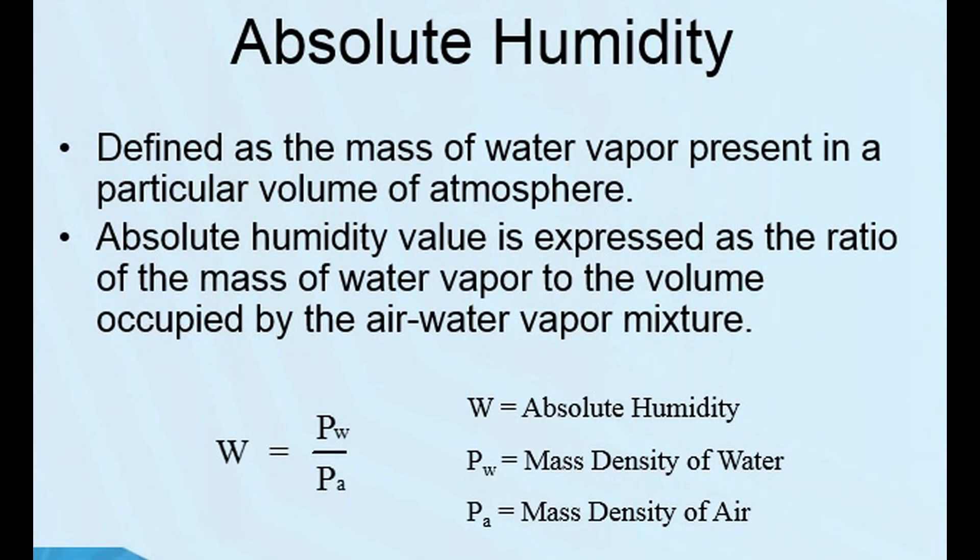Measuring humidity can be difficult because it can vary with temperature. But the basic formula for absolute humidity is that it is the density of water divided by the density of air in a certain sample.